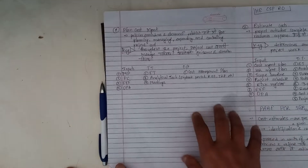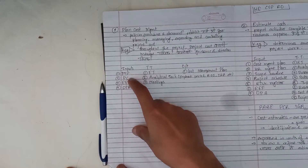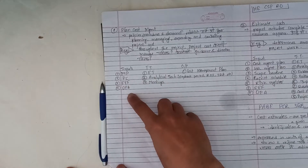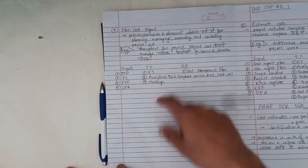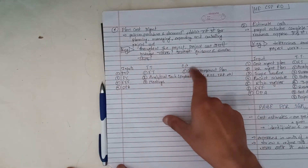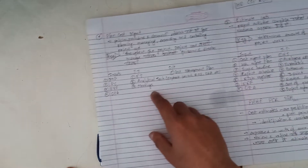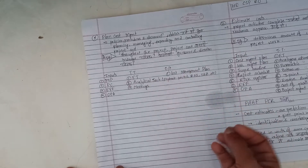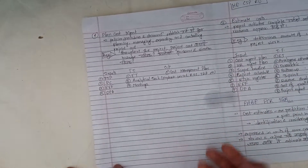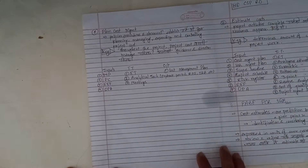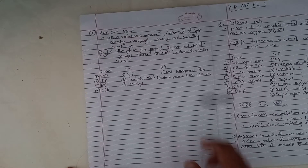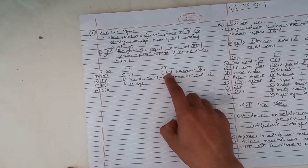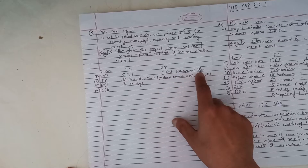The inputs are the project management plan, project charter, EEF, OPA. Tools and techniques include expert judgment, analytical techniques, and meetings. Analytical techniques include payback period, return on investment, internal rate of return, etc. The output is the cost management plan.